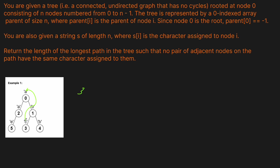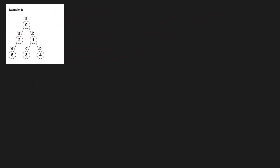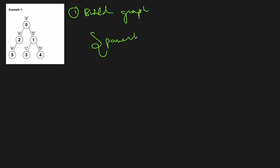On paper this question is really easy to solve, but there's just a little bit of caution we have to take to solve it with code. It's basically just a straightforward depth-first search. What we need to do is first build the graph, because we're given our data structure in the form of a list. We'll iterate over the list, and for each parent node we'll have a list of all the children — that's how we build the graph.